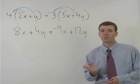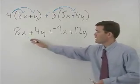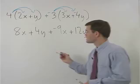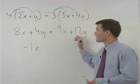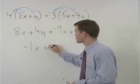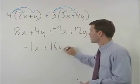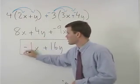Now we can combine like terms. 8x plus negative 9x is negative 1x, and 4y plus 12y is plus 16y. And that's our answer.